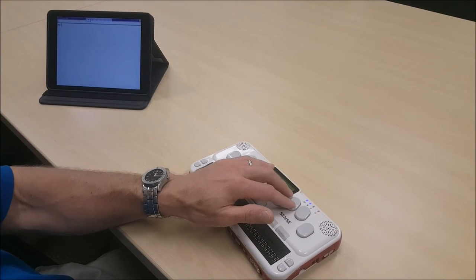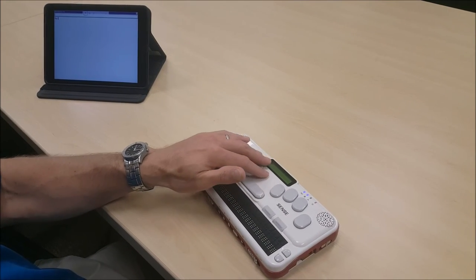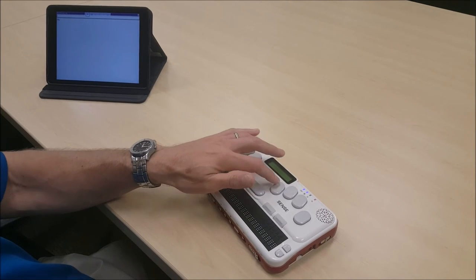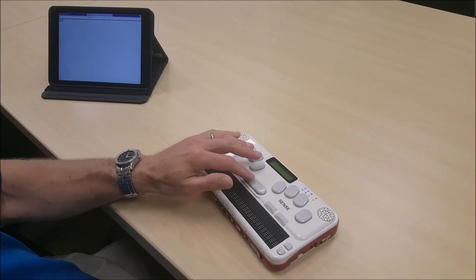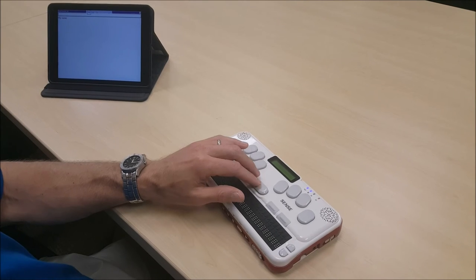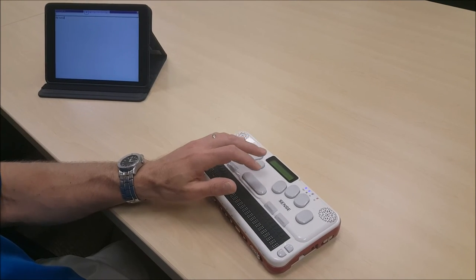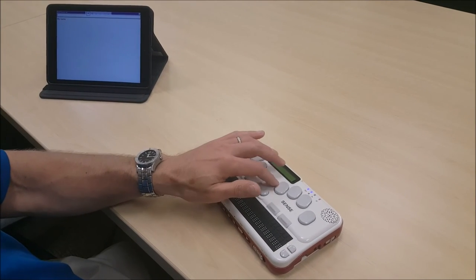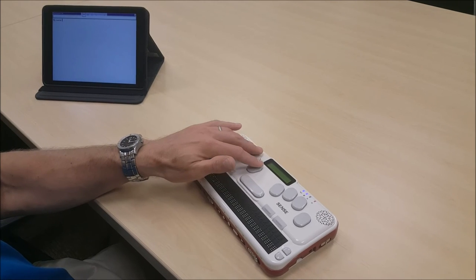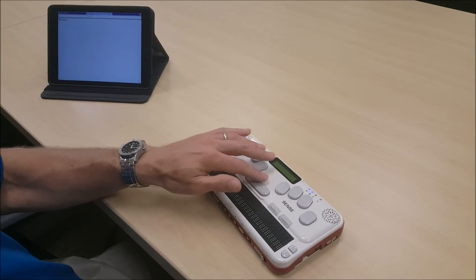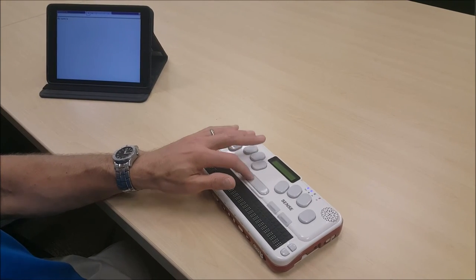Now we're going to write a name starting with dot 5. Dots 1, 3, 4, 5. Two spaces to put a space in the document.